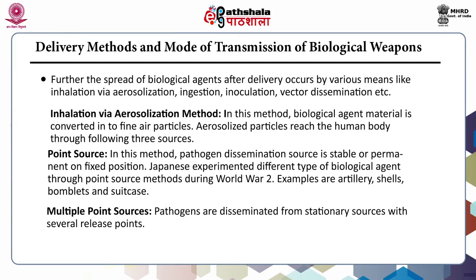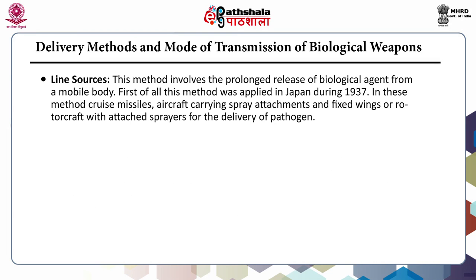Multipoint sources: pathogens are disseminated from stationary sources with several release points. Line sources: this method involves the prolonged release of biological agents from a mobile body; first applied in Japan during 1937. Methods used include cruise missiles, aircraft carrying spray attachments, and fixed-wing or rotorcraft with attached sprayers for delivery of pathogen.